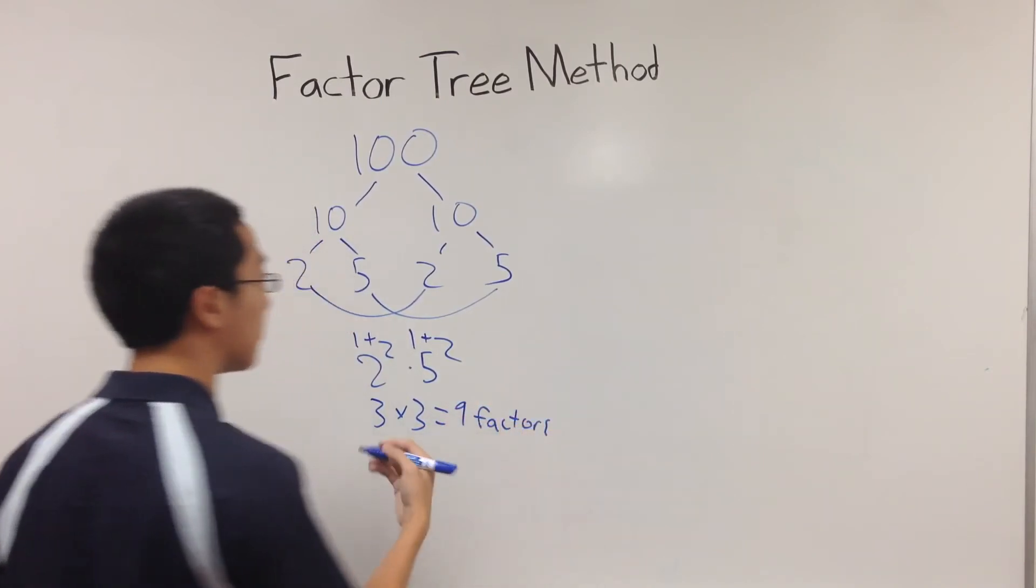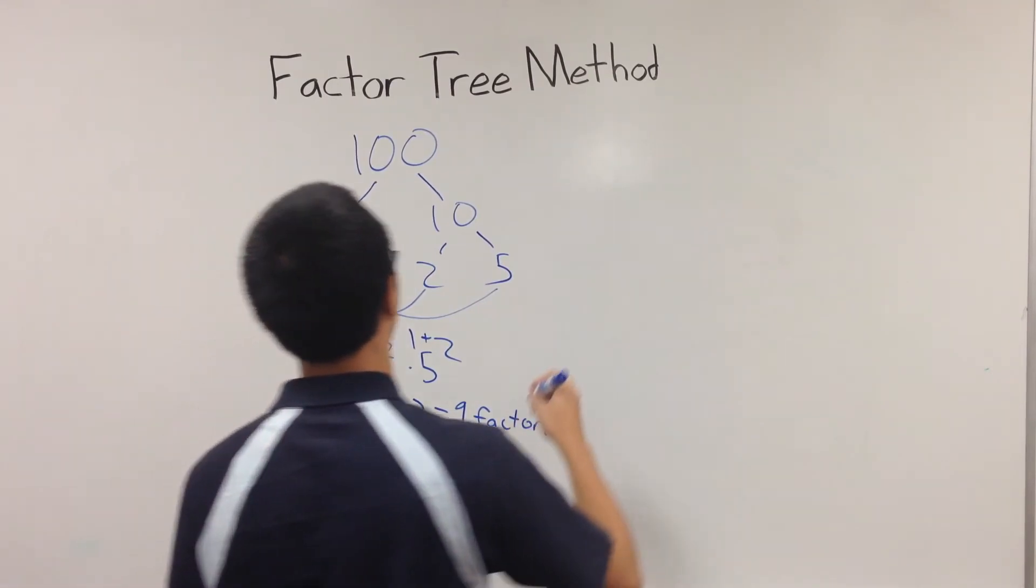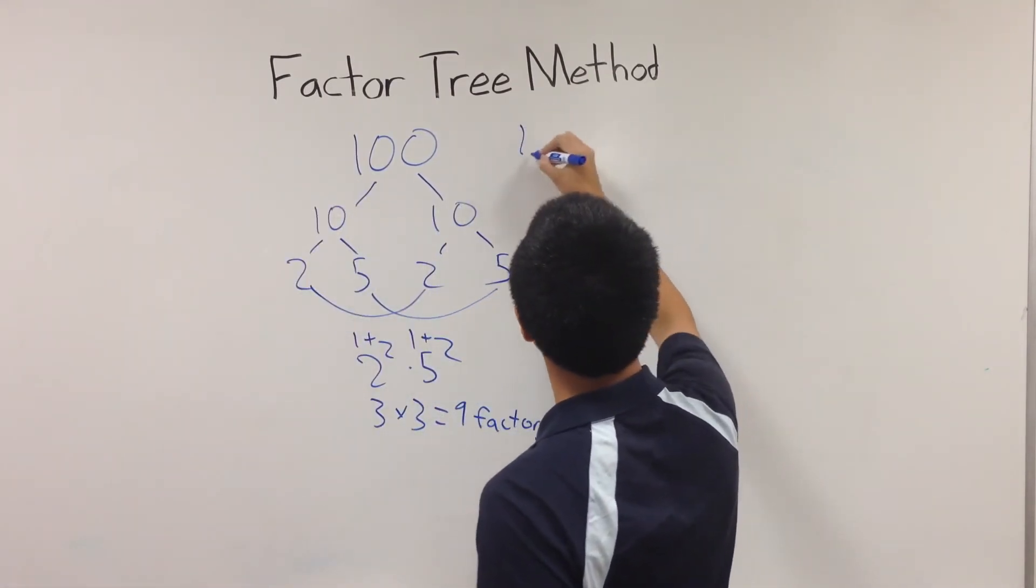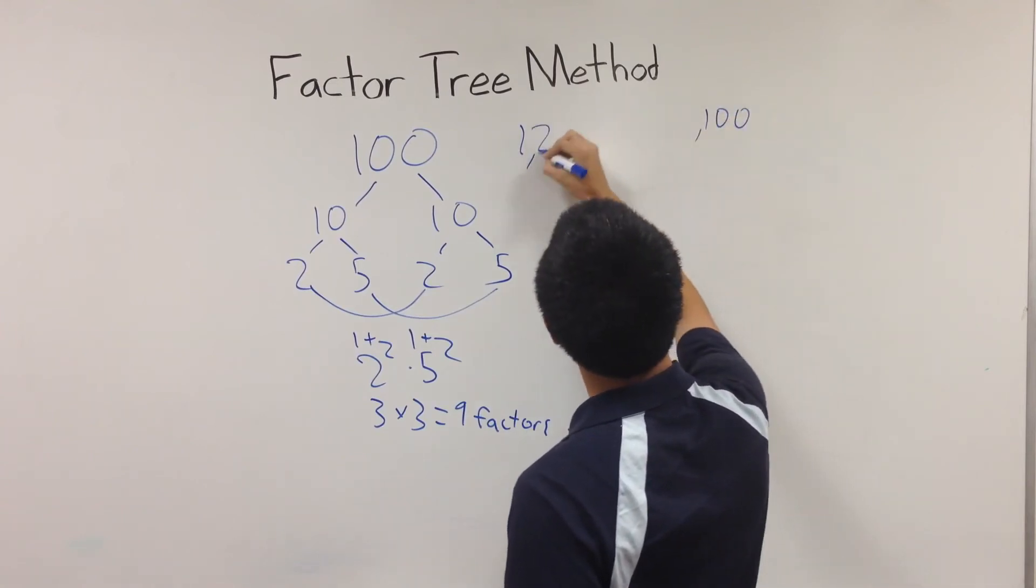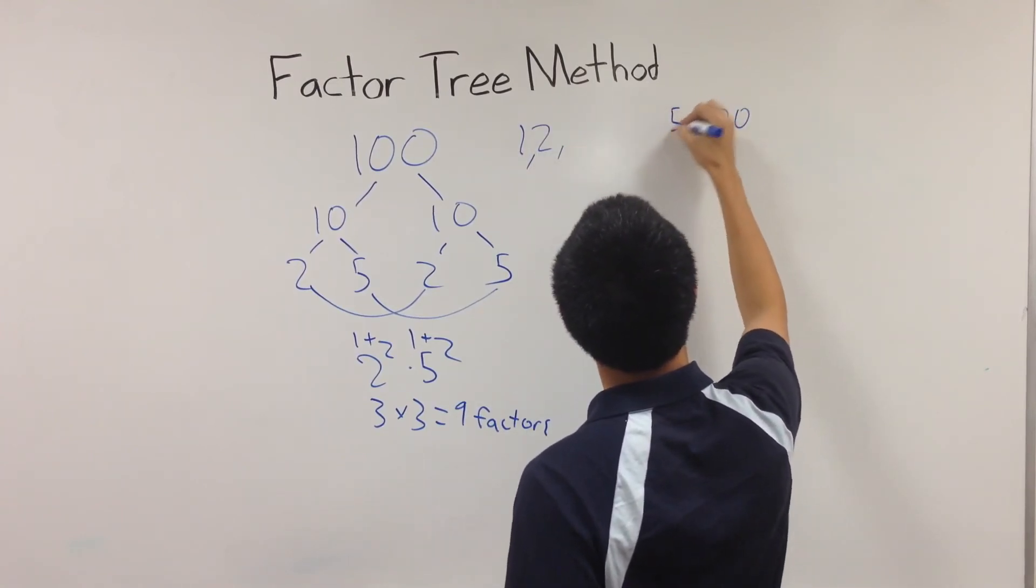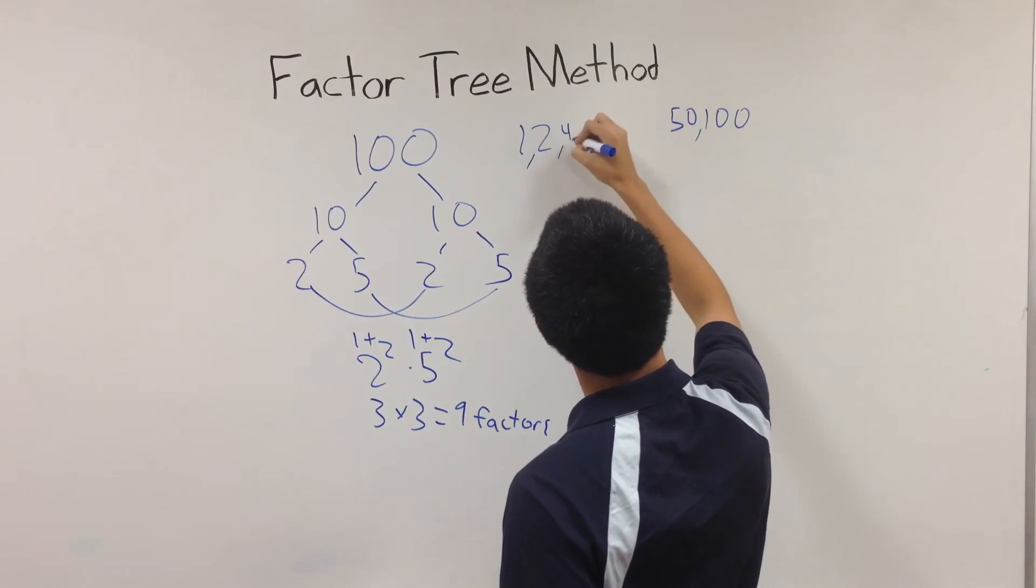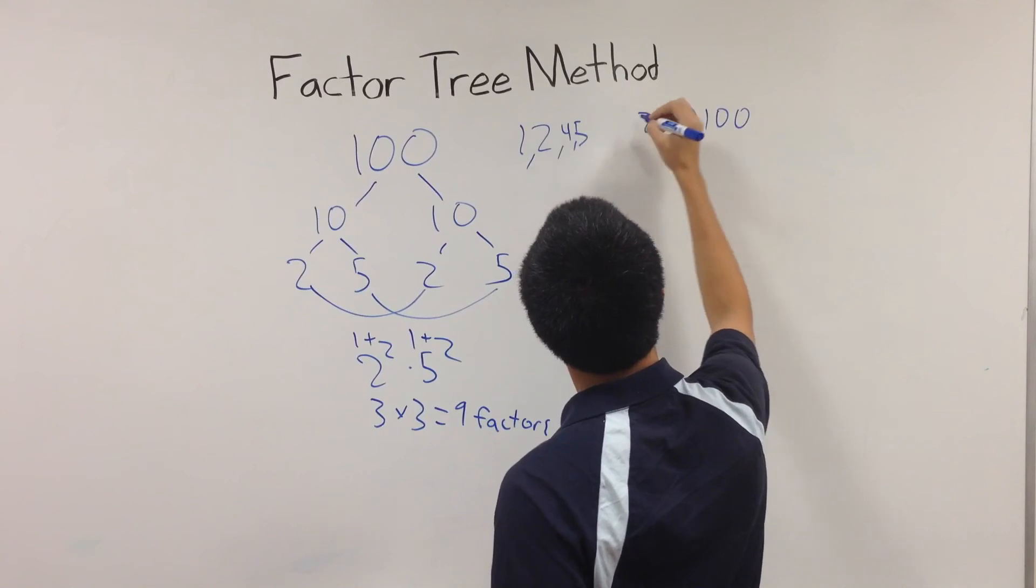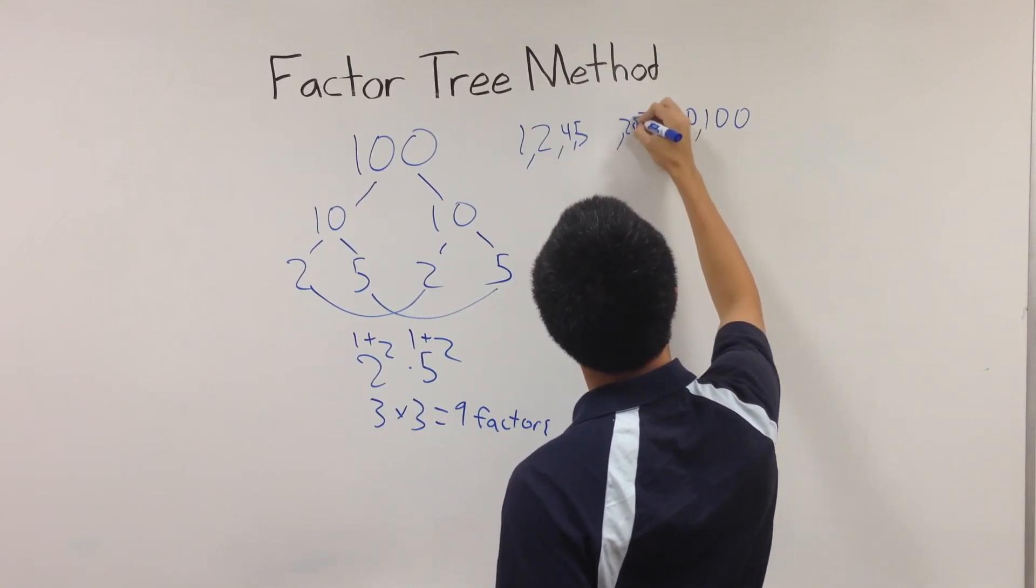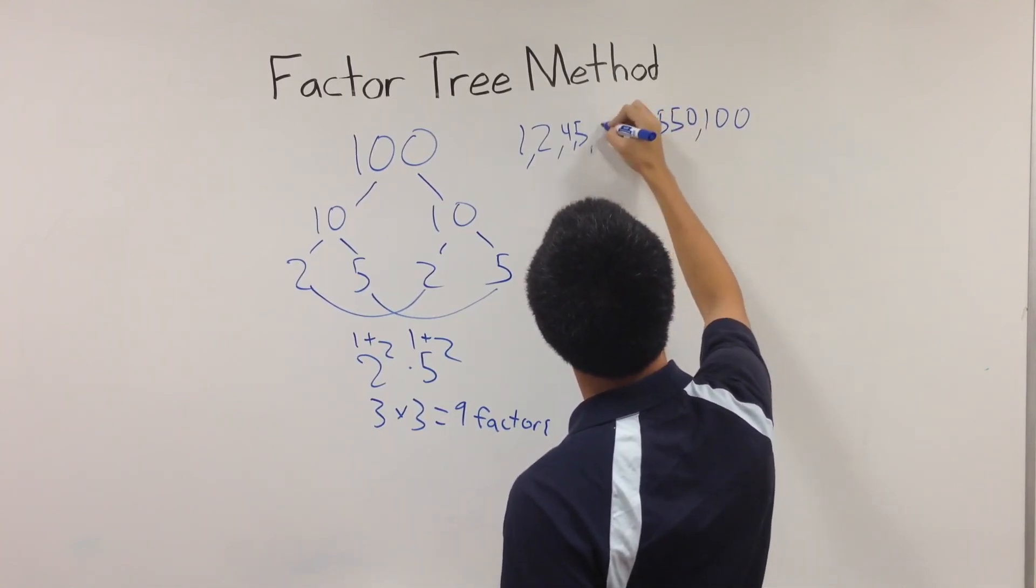To prove this, I'm going to write down all the factors. 1 times 100, 2 times 50, 4 times 25, 5 times 20, and 10.